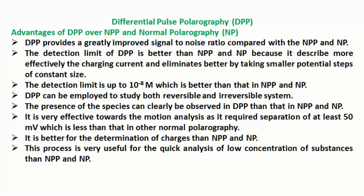The advantages of DPP over NPP and normal polarography (NP): DPP provides a greatly improved signal-to-noise ratio compared with NPP and NP. The detection limit of DPP is better than NPP and NP because it suppresses the charging current more effectively by taking smaller potential steps of constant size. The detection limit is up to 10^-8 molar. DPP can be employed to study both reversible and irreversible systems. The presence of species can be more clearly observed in DPP than in NPP and NP. It is very effective for resolution, requiring a separation of at least 50 mV, which is less than that in normal polarography. It is better for the determination of charges, and very useful for quick analysis of low concentrations of substances.